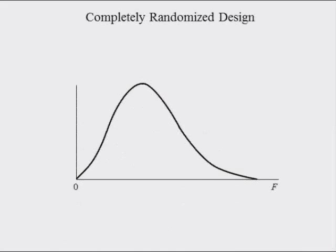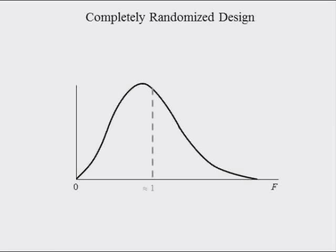Since F-values are ratios of variances and variances are squared standard deviations, the F-distribution is over all positive values. The mean of the F-distribution is approximately equal to 1. The critical value of this test, F-alpha, is found in the F-distribution table.